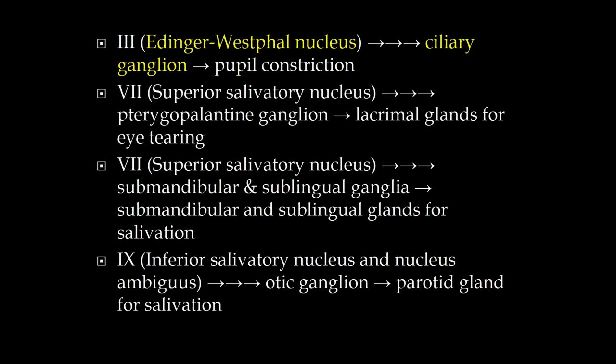The cranial nerves with a parasympathetic contribution are three, seven, nine, and ten. For cranial nerve three, the preganglionic neuron has a name: the Edinger-Westphal nucleus — that's important and will come up many times. The named ganglion is the ciliary ganglion, and from there it goes out to constrict the pupil. So: Edinger-Westphal nucleus and ciliary ganglion for cranial nerve three.